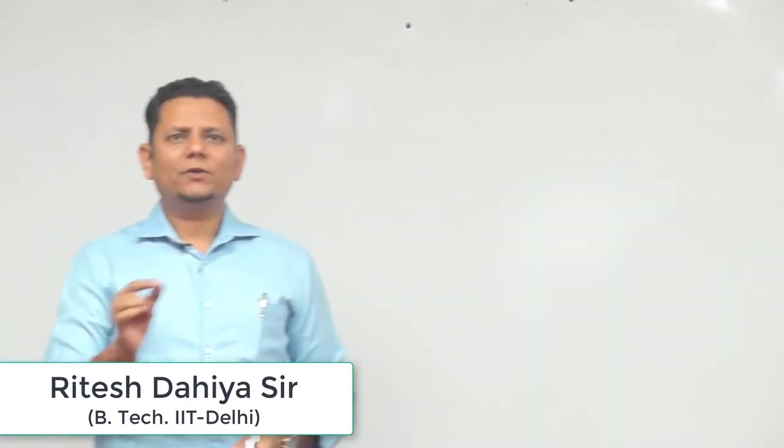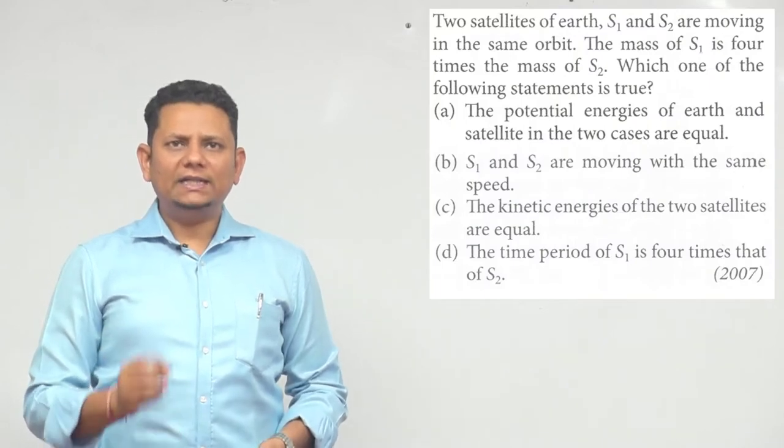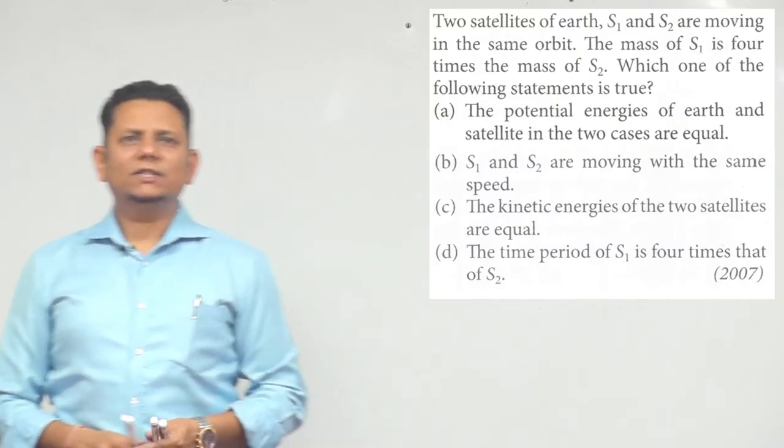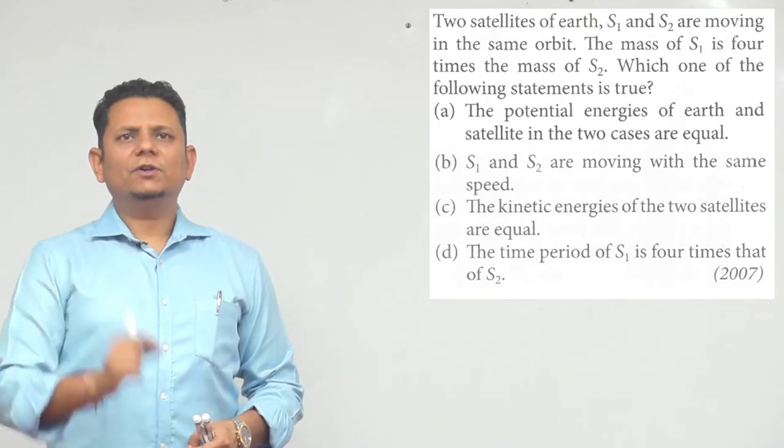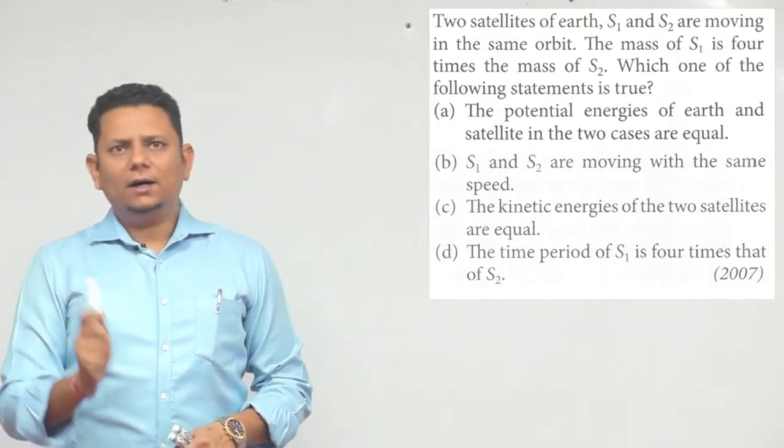Next question, question 27, says two satellites of Earth, S1 and S2, are moving in the same orbit. The mass of S1 is four times the mass of S2. Which one of the following statements is true? The first statement: